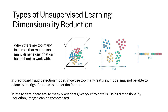Another example is image data. Nowadays we have very high-resolution cameras that capture tiny details using too many pixels, so storing those images takes too much space. And if you have to do any kind of computation or build models using those images, it takes too much computational power and time. Using dimensionality reduction, you can compress those images to store them in a smaller space, and building models will take much less time and computational power. So unsupervised learning models can also be used to prepare data for supervised learning.